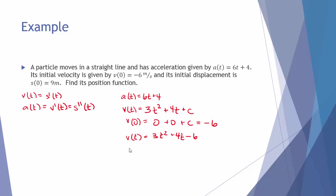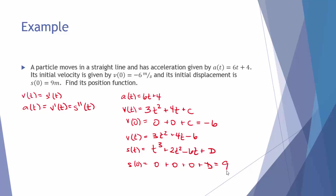Taking the antiderivative of the velocity gives s(t) = t³ + 2t² − 6t + D, where D is a new arbitrary constant (not the same as the velocity's C). Using s(0) = 9: plugging in 0 zeros out all terms except D, so D = 9. Therefore, the position function is s(t) = t³ + 2t² − 6t + 9 meters.